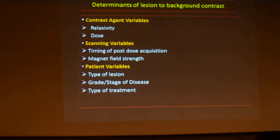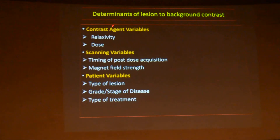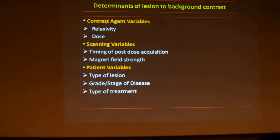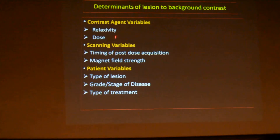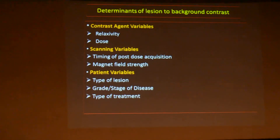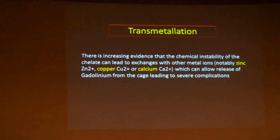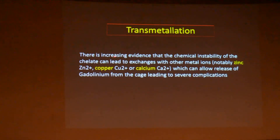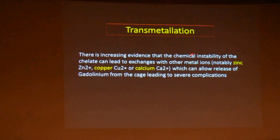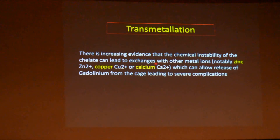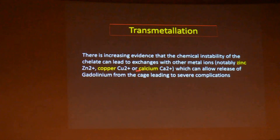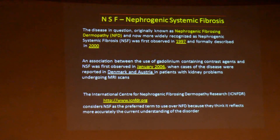Various variables affect enhancement: contrast variables, scanning variables, and patient variables. Regarding transmetallation, there is increasing evidence of chemical instability of the chelating agent, leading to exchanges with other metals like zinc, copper, and calcium, which can cause complications with gadolinium when they chelate with it.